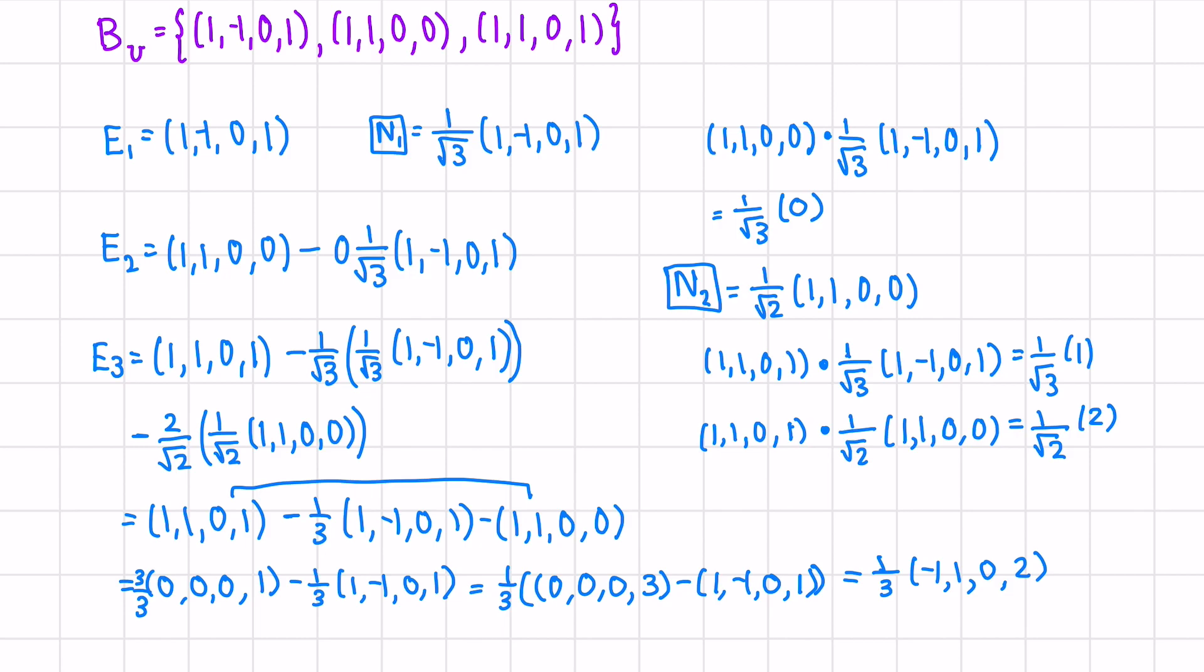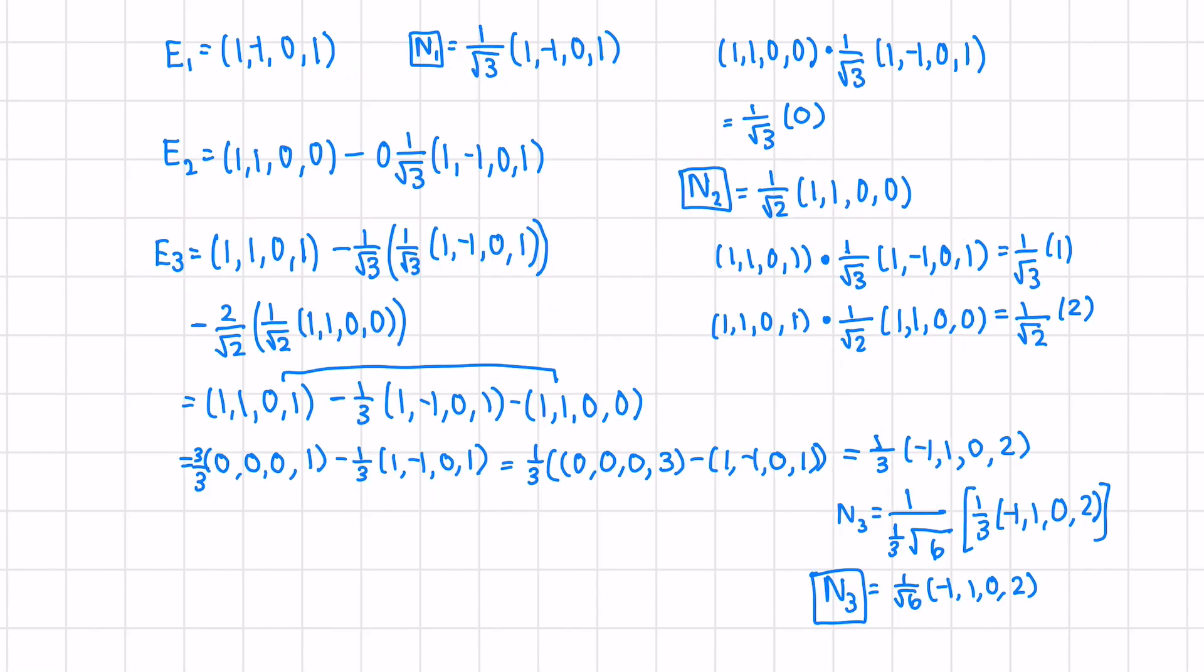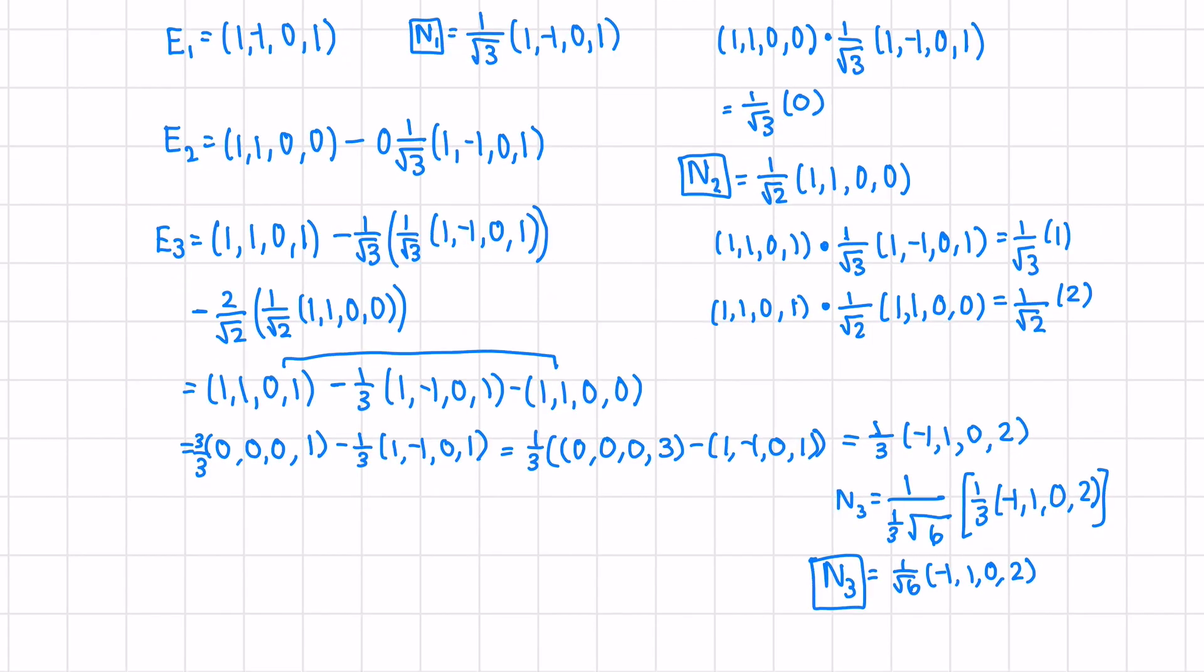Next, we want to normalize this. This means doing 1 over the norm. The norm in this case would be the absolute value of the scalar, in this case the sign doesn't change, times root negative 1 squared plus 1 squared plus 2 squared times the entire vector. We'll end up with just 1 over root 6 times negative 1, 1, 0, 2. Now we can put these three orthonormal vectors into a set, and this will form an orthonormal basis of U.